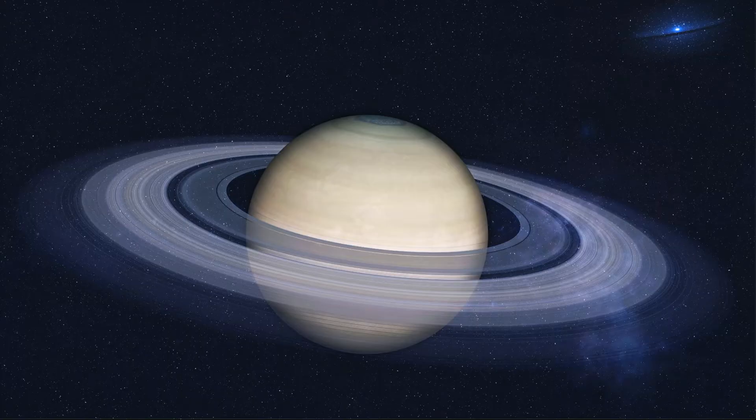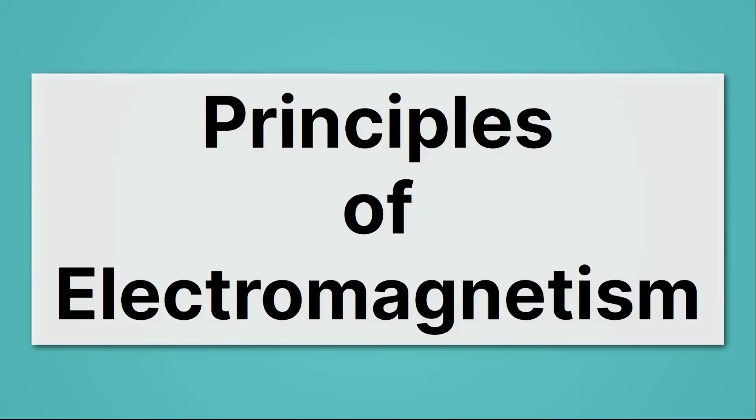But what he's most famous for are these scary-looking equations, known as the Maxwell equations. Notice all the E's and B's. Well, the E stands for electric field, and the B stands for magnetic field. And what you'll notice is these equations relate electricity and magnetism. And that's why we've combined electricity and magnetism into one word, electromagnetism.